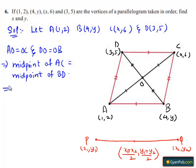Here the midpoint of AC equals (1 + x)/2, (2 + 6)/2 that equals the midpoint of BD which is (3 + 4)/2, (5 + y)/2.